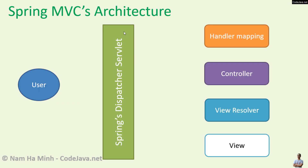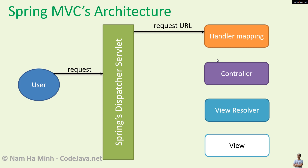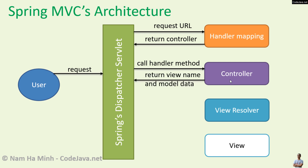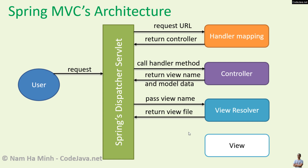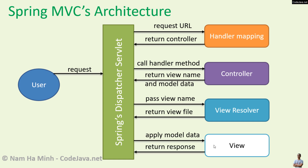Spring MVC provides a front controller called the Dispatcher Servlet. When a request comes into the application, it is handled by the Dispatcher Servlet, which uses handler mapping based on the request URL to select an appropriate controller. The dispatcher then calls the handler method of the controller, which returns the view name and model data. The dispatcher passes the view name to the view resolver, which returns the view file, and then the dispatcher renders the response to the user.